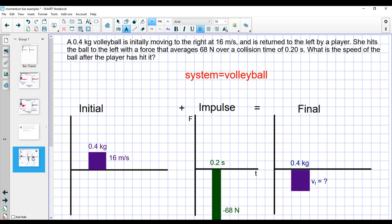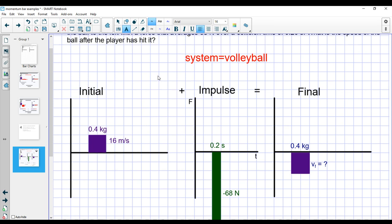0.2 seconds is actually relatively large because a volleyball is going to squish a bit and unsquish. It takes a lot more time than like really rigid things that hit each other. So we want to find the speed of the ball after the player hits it. So if our system is just the volleyball, then there is definitely a force external to the system. Something that's not part of our system hits the ball. That's the player. And so that's going to change the momentum of our system.